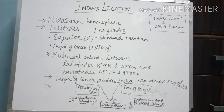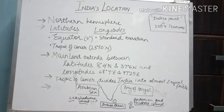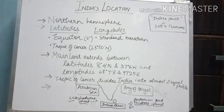Through a diagram we can see India's island structures. Lakshadweep island is separate from the mainland but is still a part of India. Similarly, the Andaman and Nicobar islands on the eastern side are also part of India. On the west side there is the Arabian Sea, on the eastern side is the Bay of Bengal, and on the southern side is the Indian Ocean.